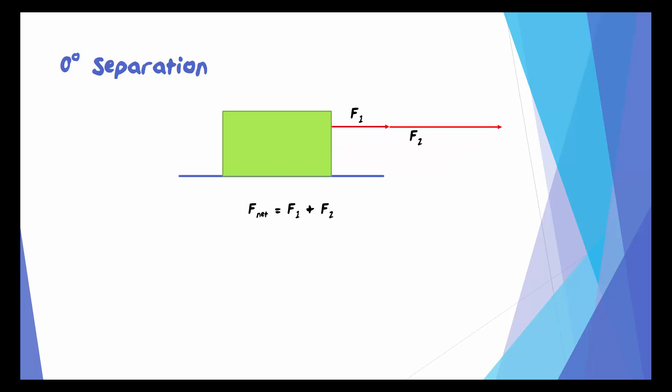If we combine these, we end up with a net force that is just the sum of F1 and F2. And that's what happens at zero degrees of separation. The resultant is simply the sum of the components.